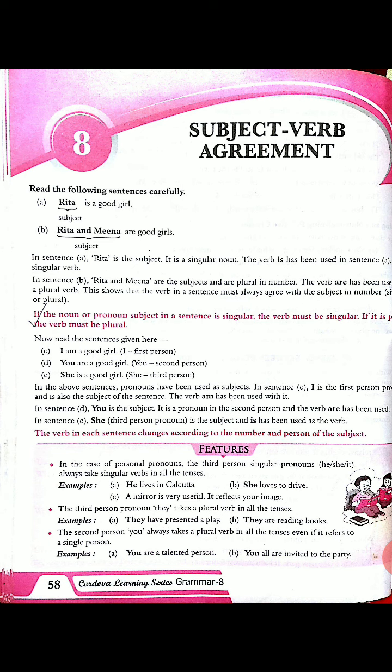For example, if I say 'he live in Calcutta,' that is wrong. Here 'he' is the singular pronoun and 'live' is the verb. I must add 'S' — 'lives' — and then it will agree with the subject. The correct sentence is 'he lives in Calcutta.' 'He likes to eat ice cream.' 'He walks daily.' So if the subject is singular, we must add S to the verb.